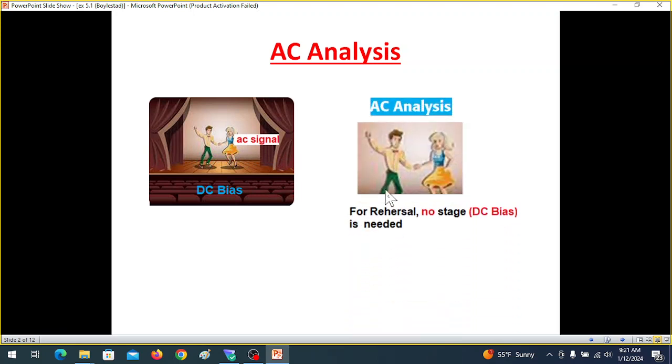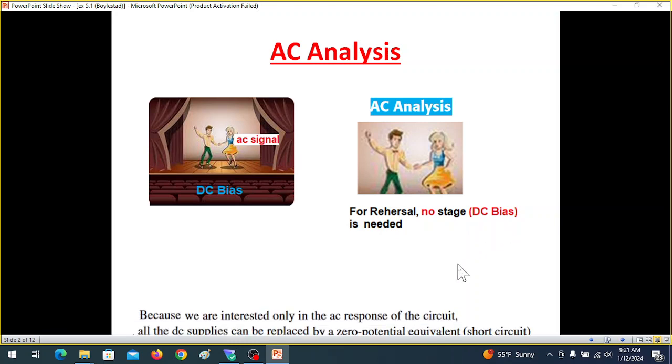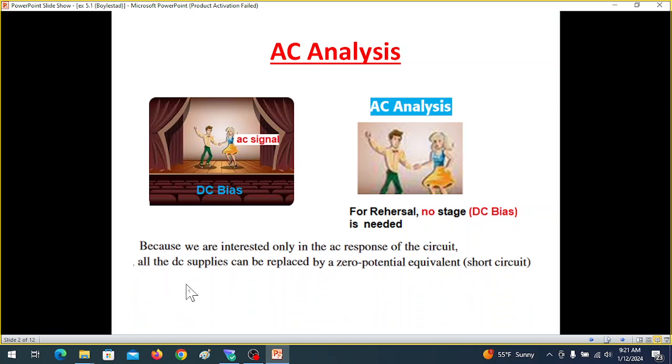Now if we have to test or do the rehearsal of this couple, then we don't need a stage. It can be done on the floor. Similar when we are doing AC analysis, we don't need a stage, that means we don't need DC bias. Because we are interested only in the AC response of the circuit, all the DC supplies can be replaced by zero potential equivalent or short circuit.